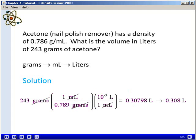Now we'll plug in the numerical values associated with each unit. From the density, we know that one milliliter is equal to 0.789 grams of acetone. We also know that one milliliter is equal to 10 to the negative 3 liters.